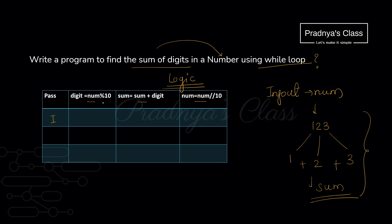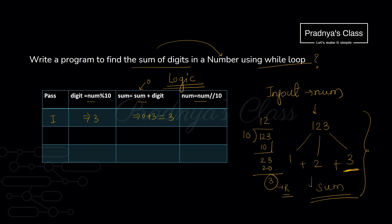In pass 1, the number is 123. Number modulus 10: dividing 123 by 10 gives remainder 3, so digit equals 3. We initialize sum to 0, so sum becomes 0 plus 3 equals 3. Then we reduce the number by dividing by 10 — the new number becomes 12. In pass 2, 12 modulus 10 gives remainder 2, so sum becomes 3 plus 2 equals 5, and the number reduces to 1. Note we are using floor division because Python's division operator gives float results.